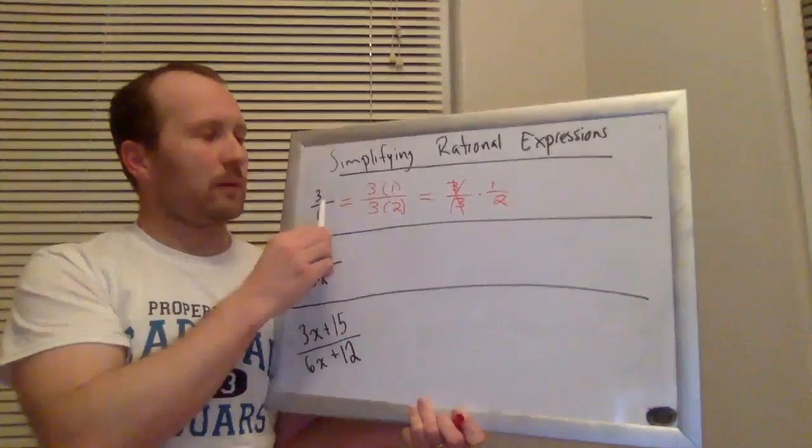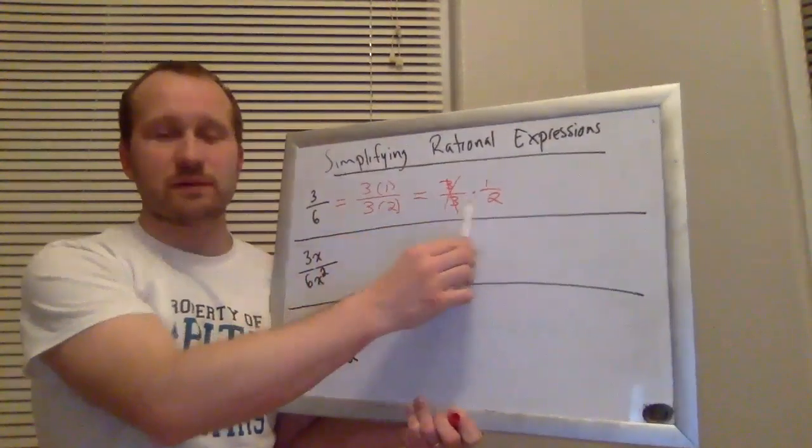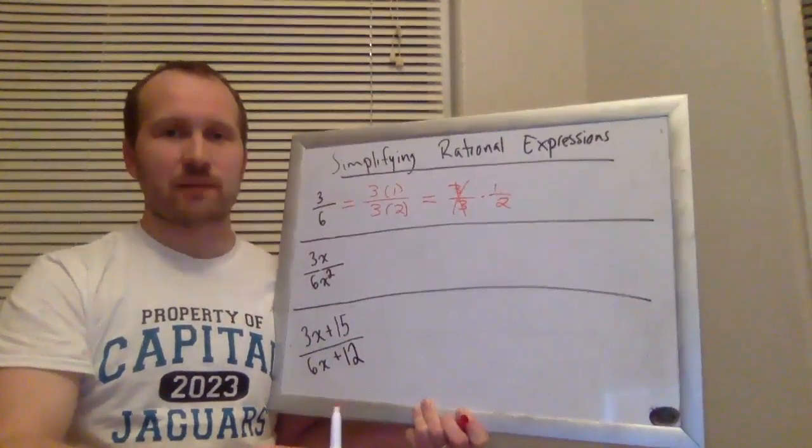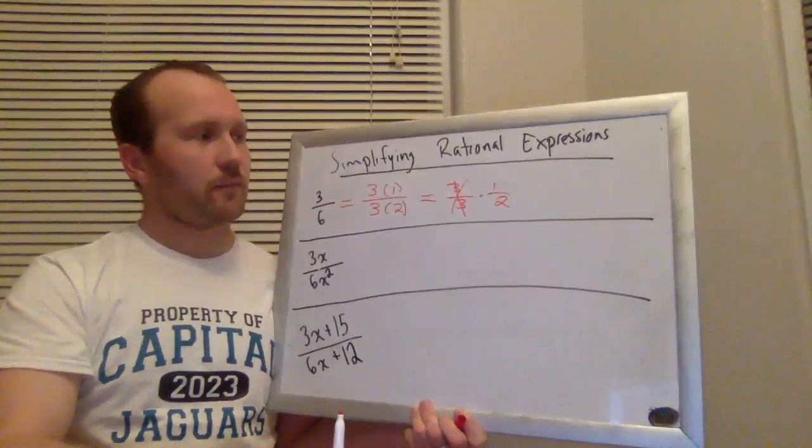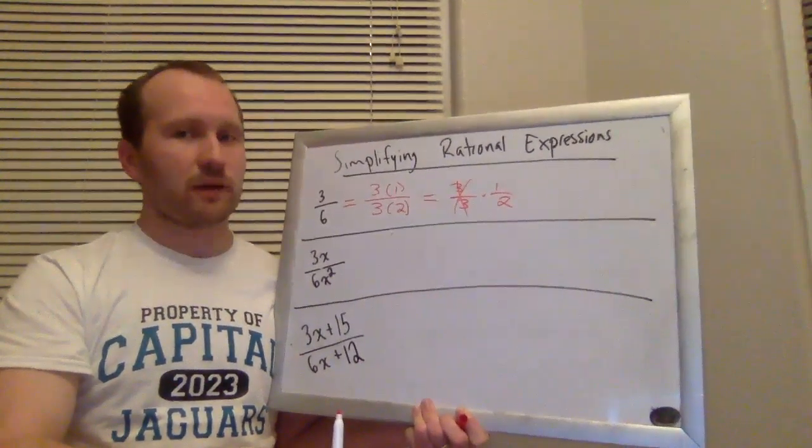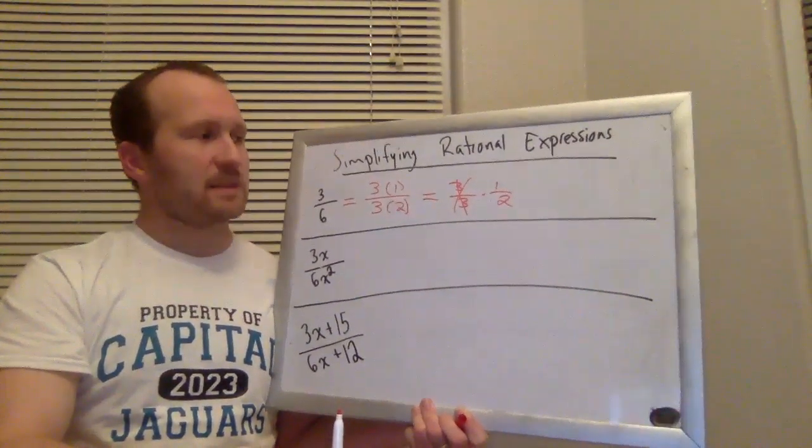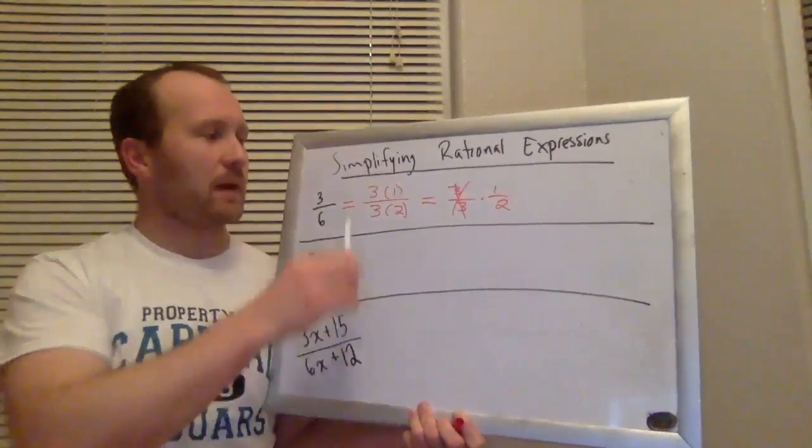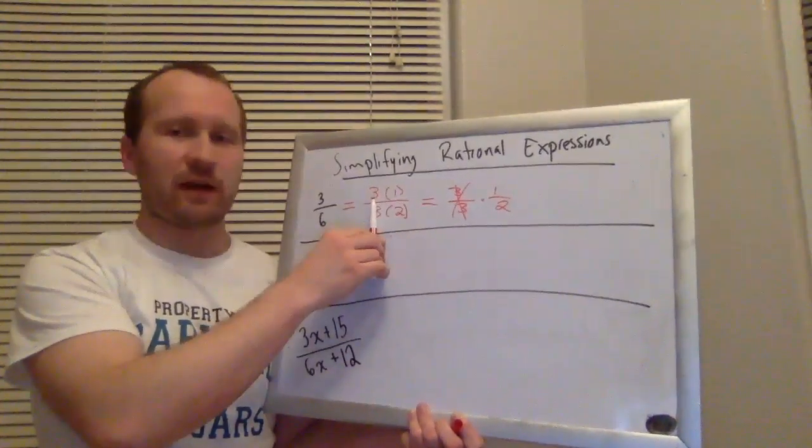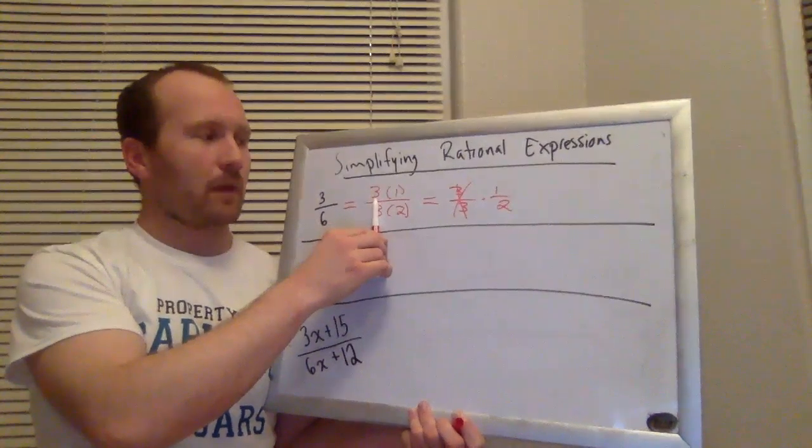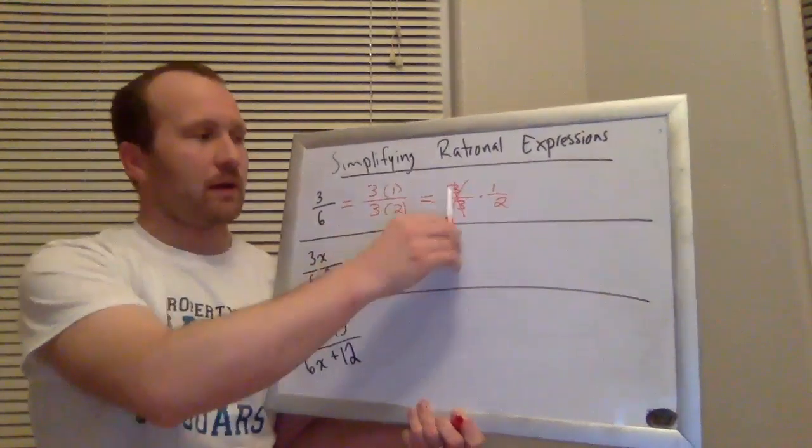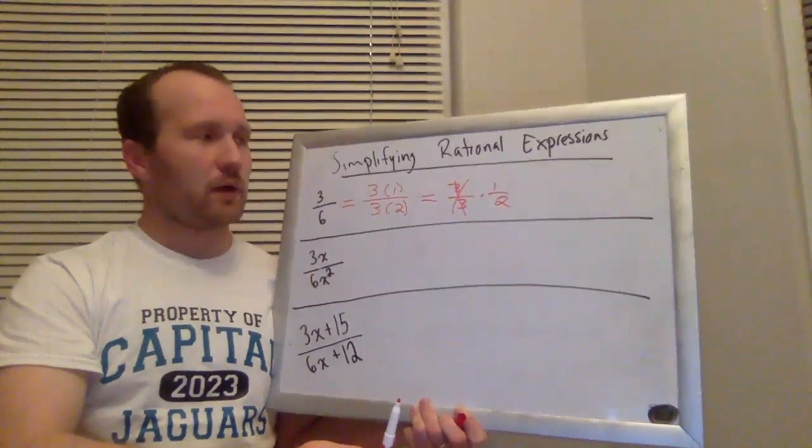A lot of you probably are not doing three steps when you simplify fractions and I'm not suggesting that you should. But the really important thing to recognize here is what's happening. And what's happening is I'm pulling a common factor from the top and the bottom and I'm cancelling it as a one.